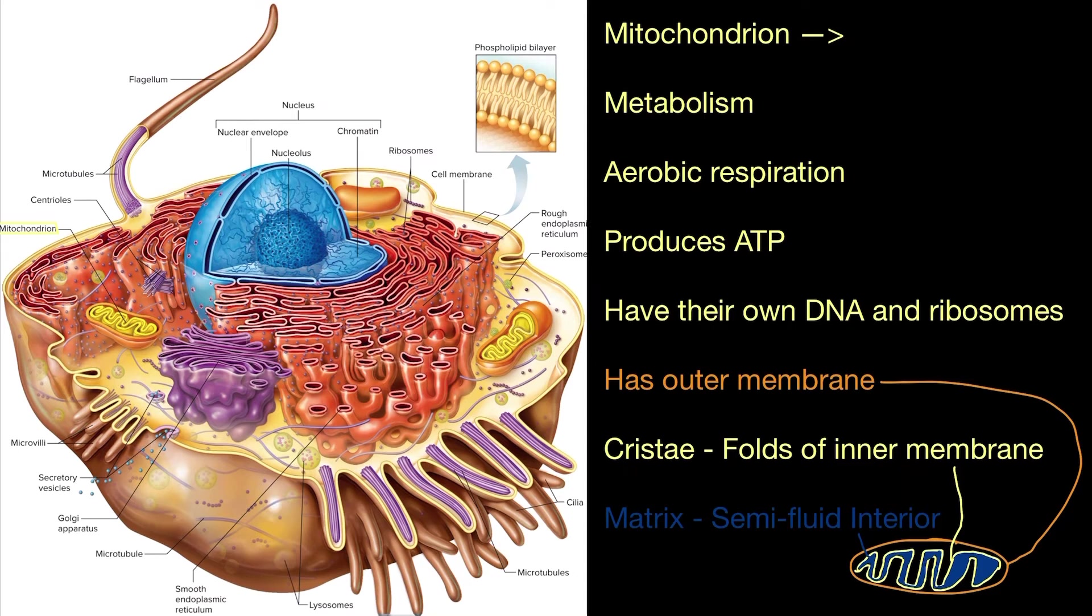Now here is an ideal example of a mitochondrion. It has an outer membrane, it has cristae which are folds of the inner membrane, and it also has the matrix which is the semi-fluid interior.